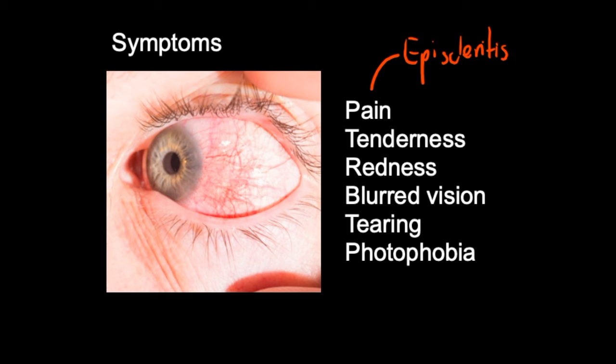In an exam question, if they're asking about a patient with a red eye who experiences pain when moving the eye, and you have to decide between scleritis and episcleritis, remember that episcleritis is much less likely to be associated with pain. You can also get tenderness of the eye, redness of the sclera, blurred vision, tearing, and extreme sensitivity to light — which is photophobia. The redness is sometimes described in exam questions as a purple hue.